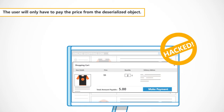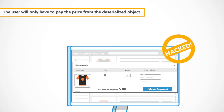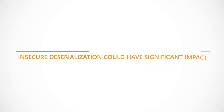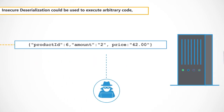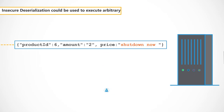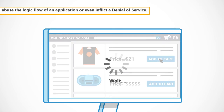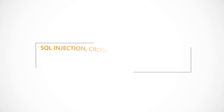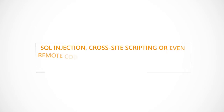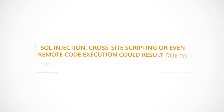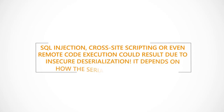The user will only have to pay the price from the deserialised object. Insecure Deserialisation could have significant impact — it could be used to execute arbitrary code, abuse the logic flow of an application or even inflict a Denial of Service. SQL injection, cross-site scripting or even remote code execution could result due to Insecure Deserialisation, depending on how the serialised object is used.